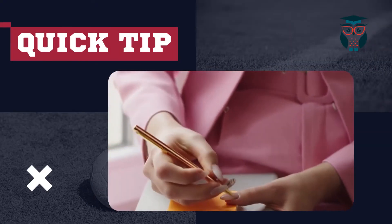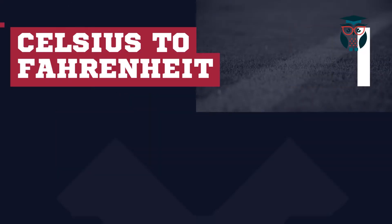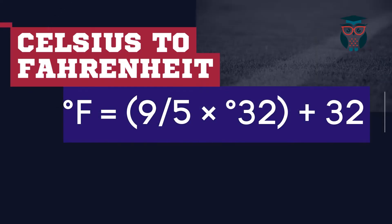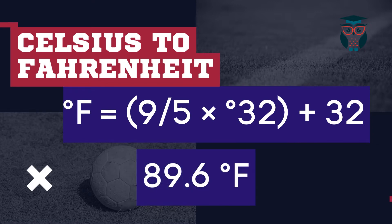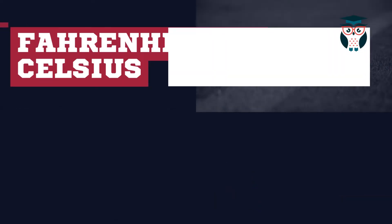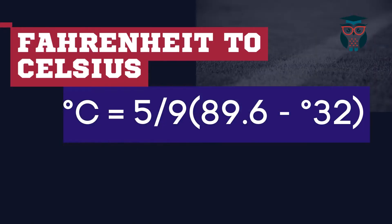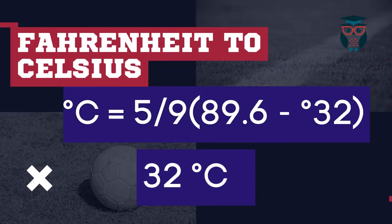Before we move to Kelvin, here is a quick tip. How can we calculate a Celsius value to Fahrenheit, or vice versa? To convert the Celsius value to Fahrenheit, you can use the formula shown on the screen. If the Celsius value is 32 and we apply the value to the formula, it will be 89.6 Fahrenheit. If the Fahrenheit value is 89.6 and we apply the value to the formula, it will be 32 Celsius.